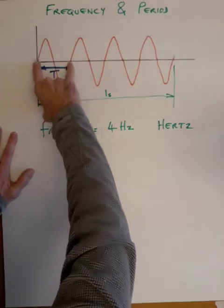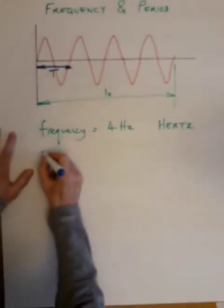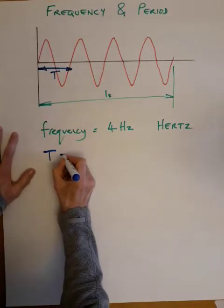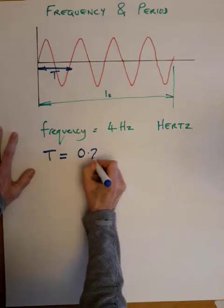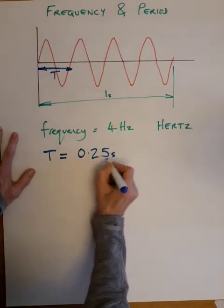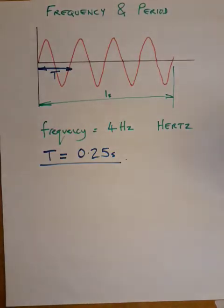one will be a quarter of a second. So we could say that the periodic time, T, is 0.25 seconds.